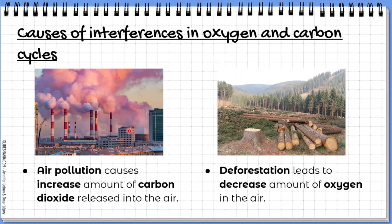One example is air pollution — smoke from factories or vehicles, open burning, or forest fires. All of these activities can cause an increased amount of carbon dioxide released into the air, meaning the carbon cycle is not balanced because there is too much carbon dioxide in the atmosphere. Another example is deforestation, which leads to a decreased amount of oxygen in the air because fewer trees are available to absorb carbon dioxide and release oxygen.